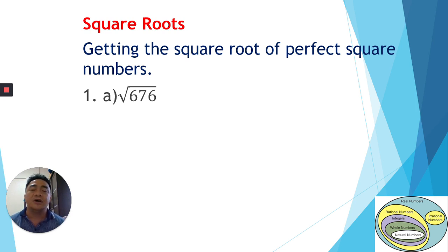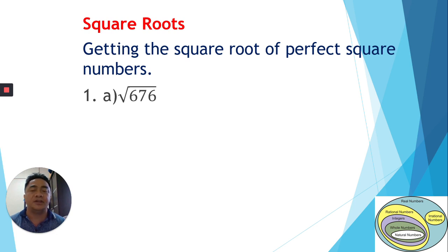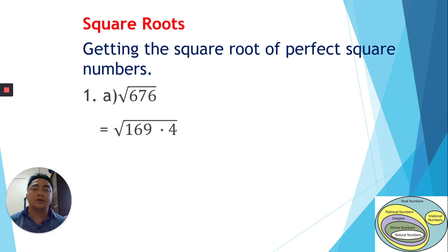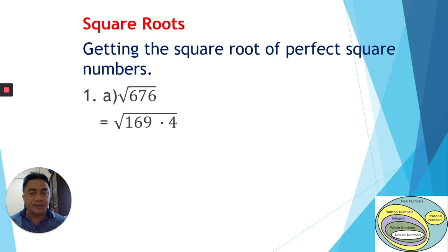For this, you need to find the factors of 676 in order to reduce it into smaller parts. You can use the short division method or the tree diagram to find the factors. Using the tree diagram, we get 169 times 4, and 169 × 4 = 676.